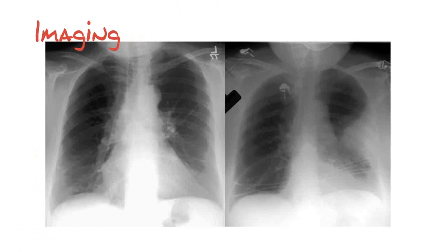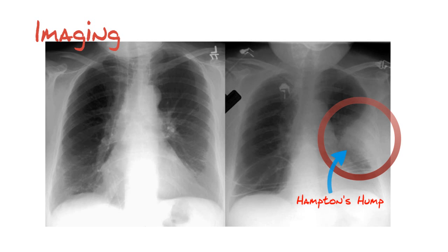The next step is imaging. Chest X-rays are not used to diagnose PEs, but there are interesting findings you can note. The most important is called Hampton's hump — comparing these two chest X-rays, you see a mound or hill on the right side. This represents tissue death or infarction: when a clot clogs off a vessel, the tissue perfused by that vessel doesn't get the nutrients and oxygen it needs. This sign should not be used for diagnosis, but merely for clinical suspicion of a PE.